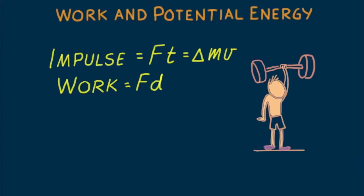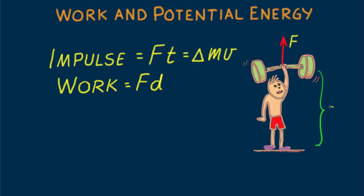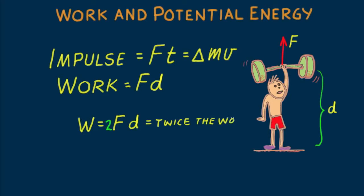For example, when you lift a barbell you push upward and it moves a vertical distance upward. Force and distance moved are in the same direction, so we say you do work on the barbell. The amount of work equals the force it takes to lift it multiplied by the distance it is raised. According to the equation W equals FD, if you lift twice the load the same distance, you do twice as much work on the barbell.